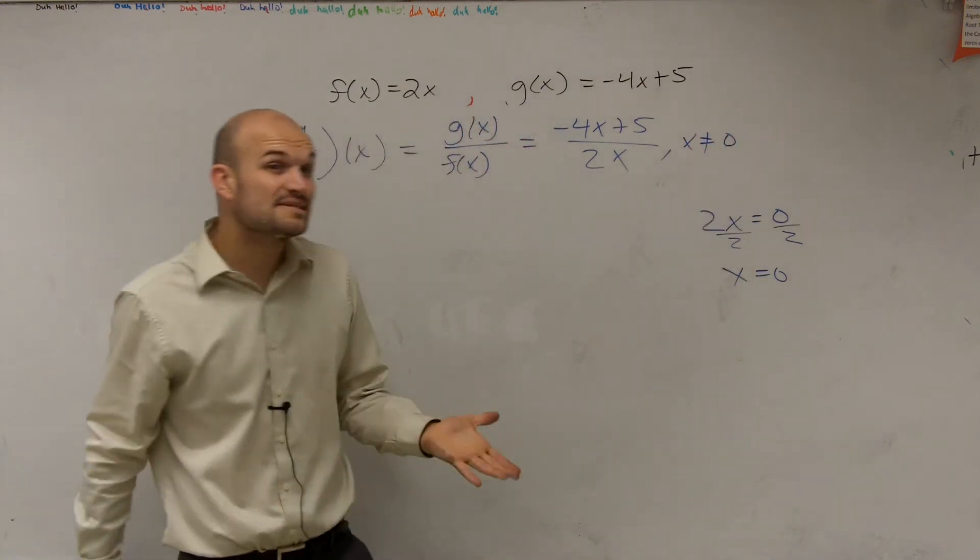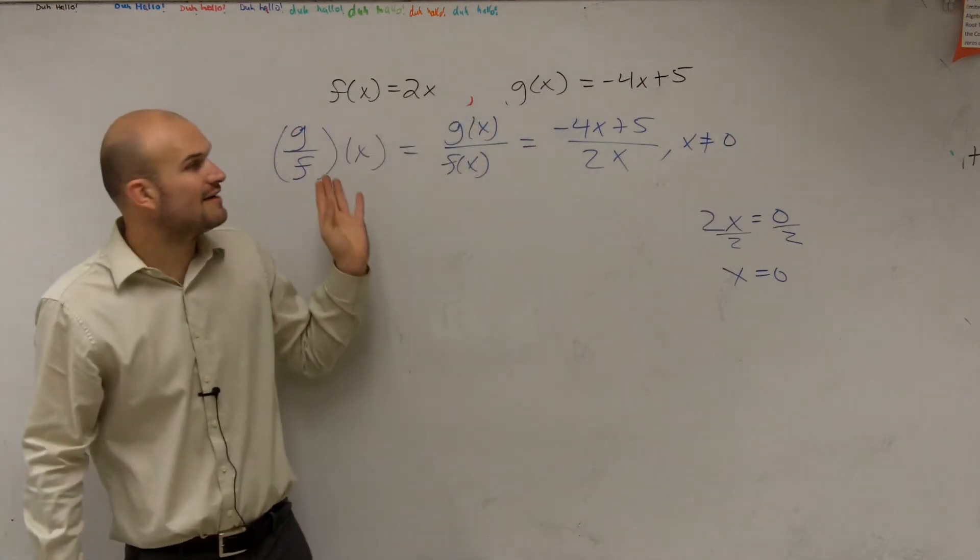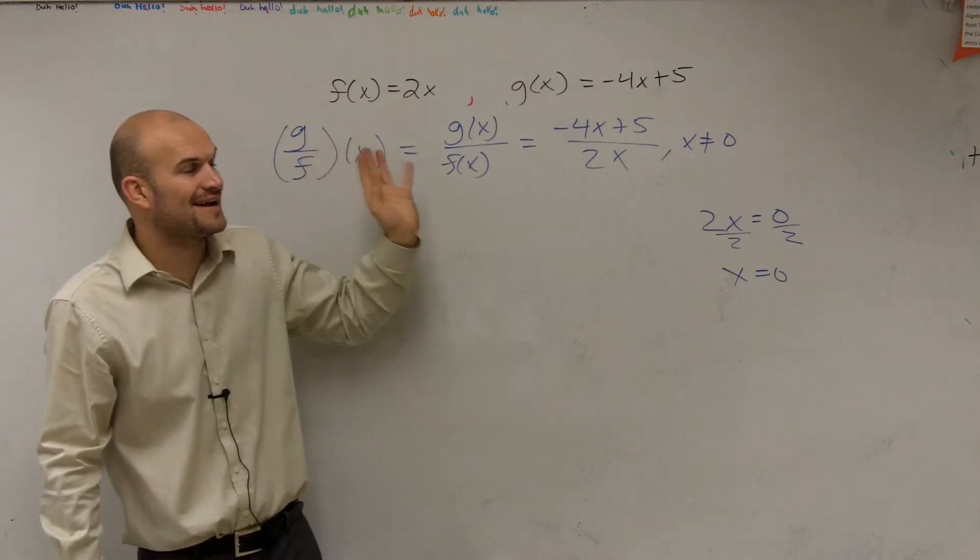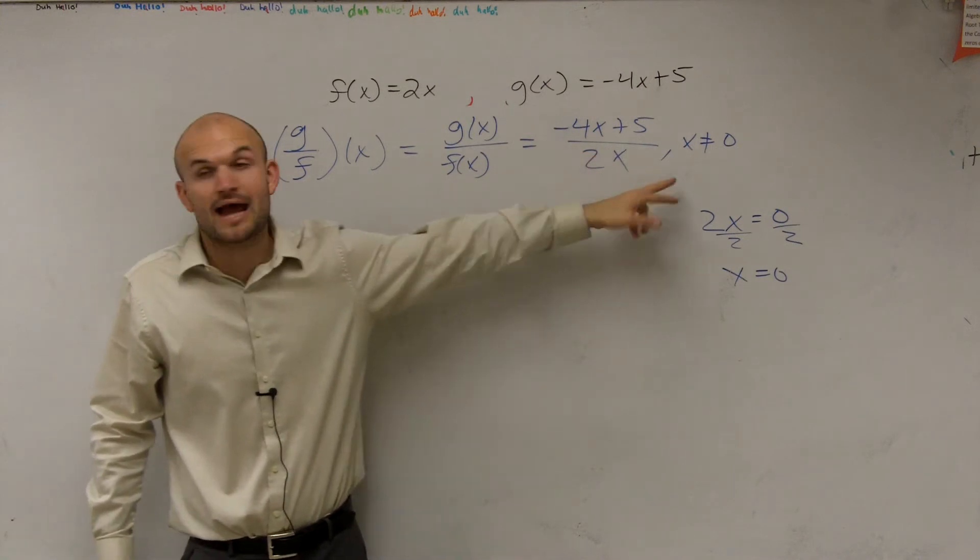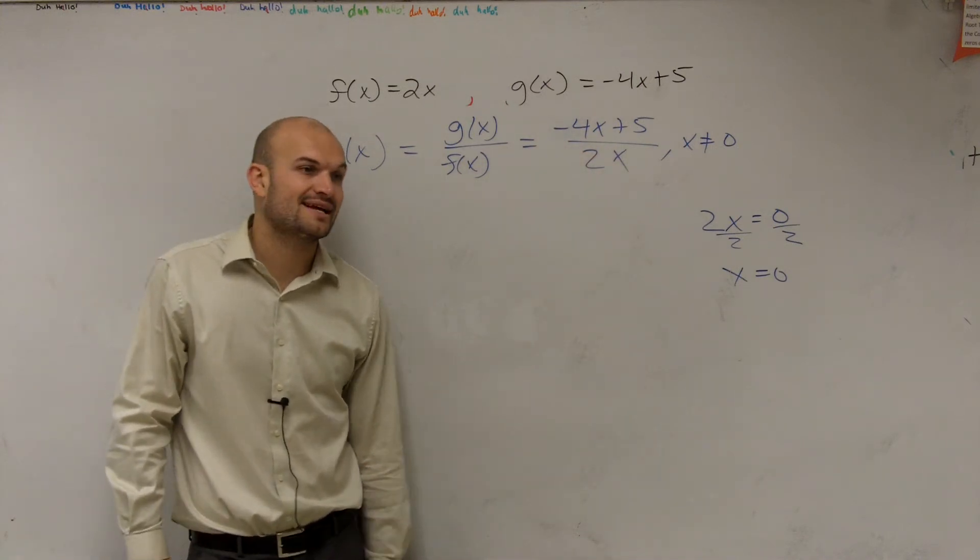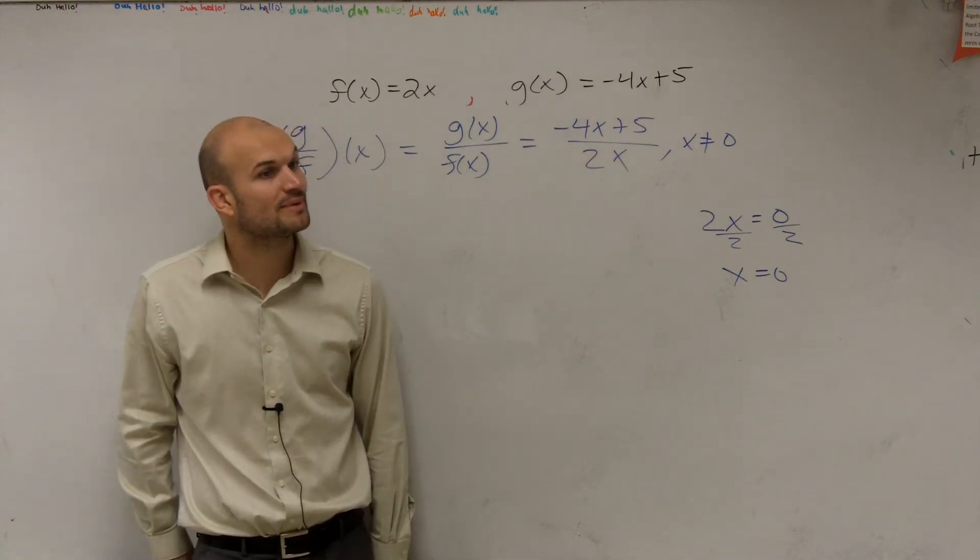So in this problem, when I do f divided by g or g divided by f, I have my numerator and denominator switched and now I'm saying x cannot equal 0. So it's a little bit different.